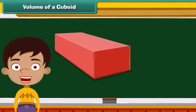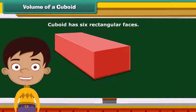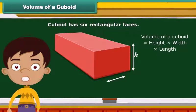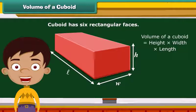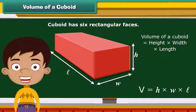Look at this closed box. This is a cuboid which has six rectangular faces. Its volume is calculated as height into width into length, or simply volume equals H into W into L.